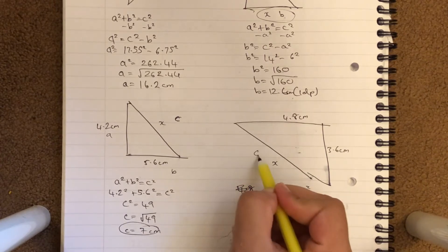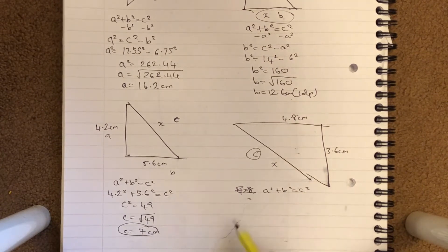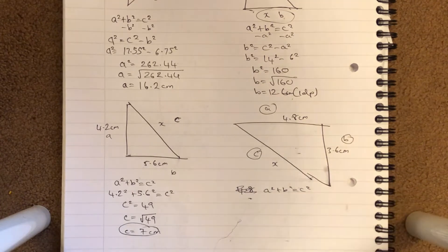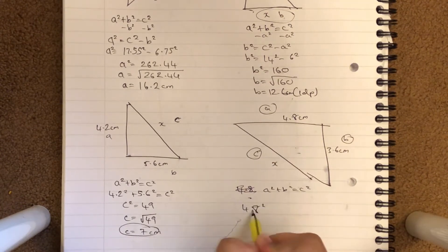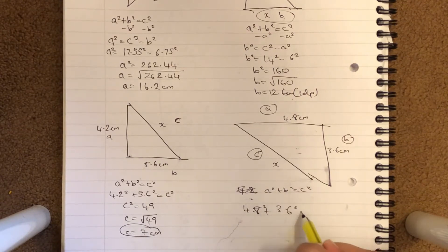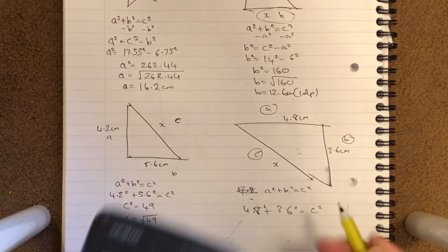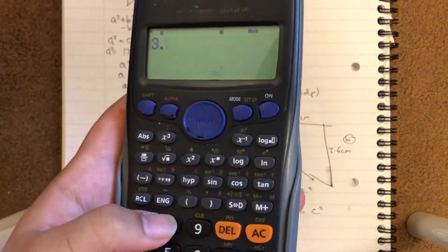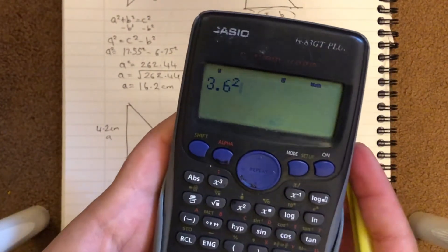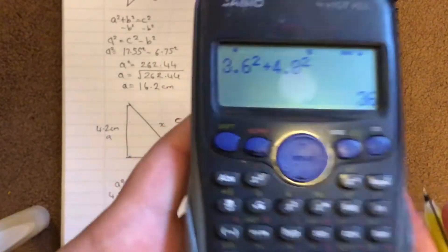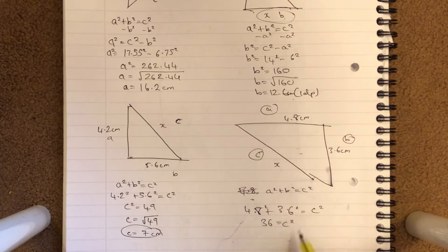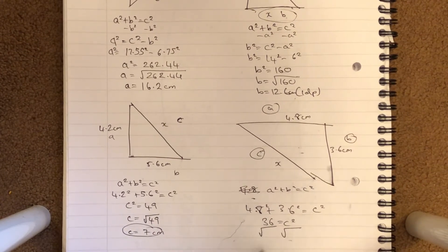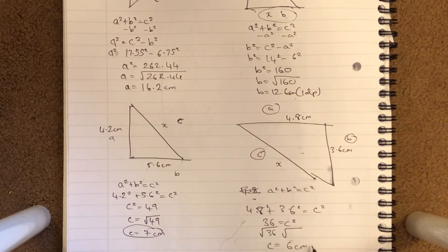Another example: x is the hypotenuse, so it's c. The other sides are a = 4.8 and b = 3.6. Write a squared plus b squared equals c squared: 3.6 squared plus 4.8 squared. In the calculator, that gives 36, so c squared equals 36. Square rooting both sides gives c equals 6 centimeters.